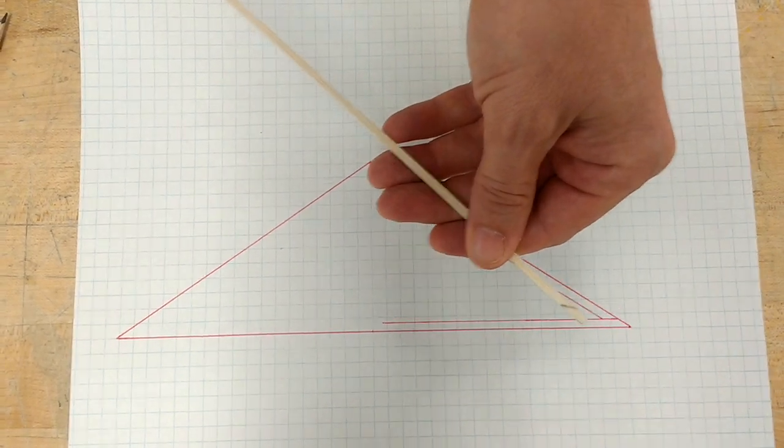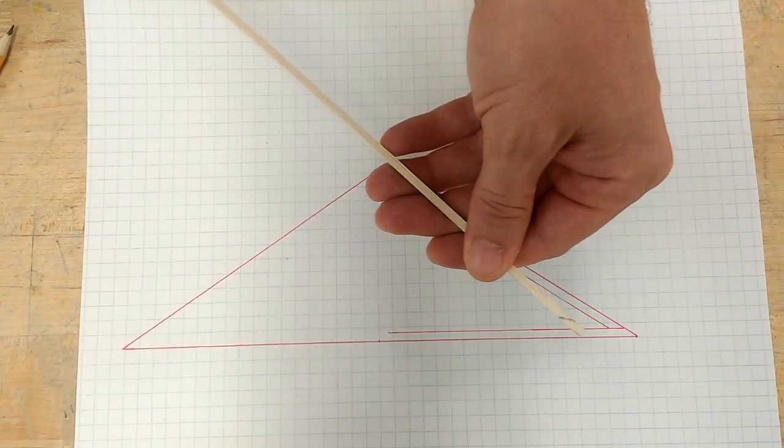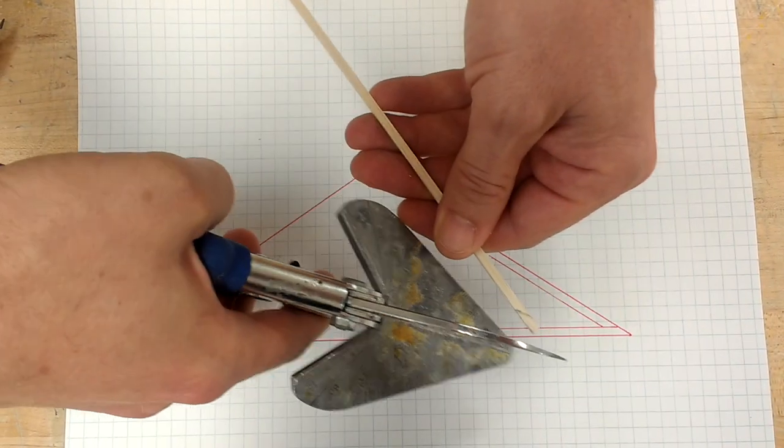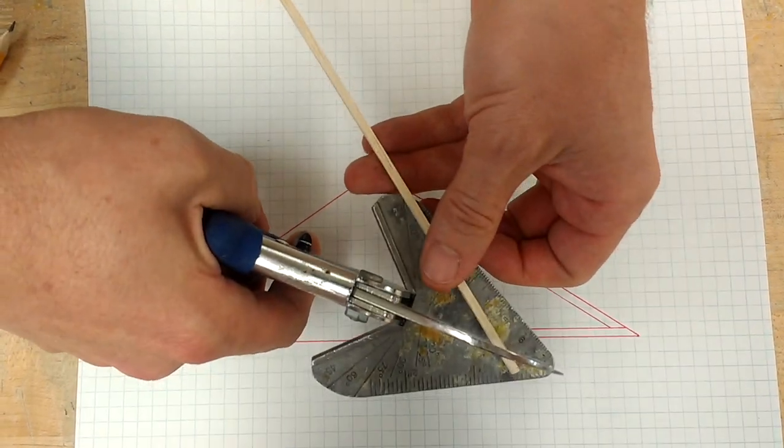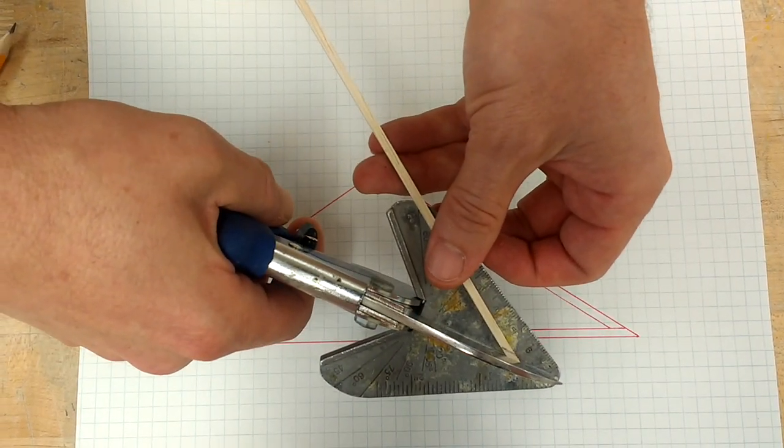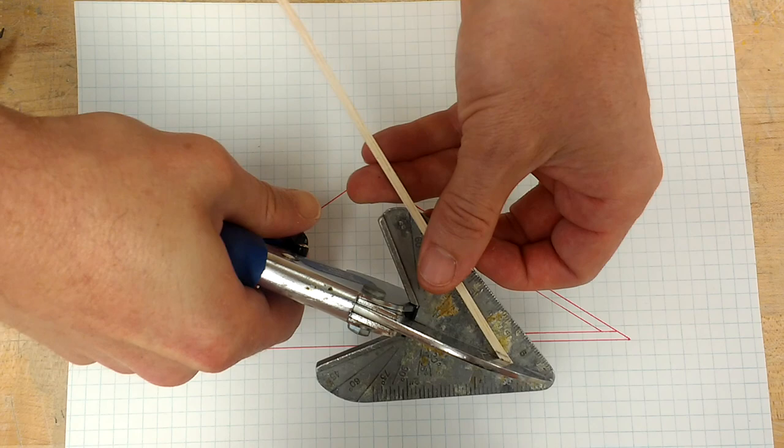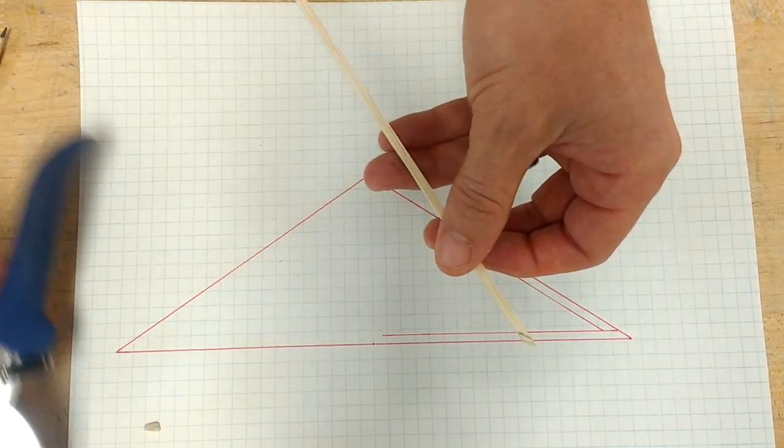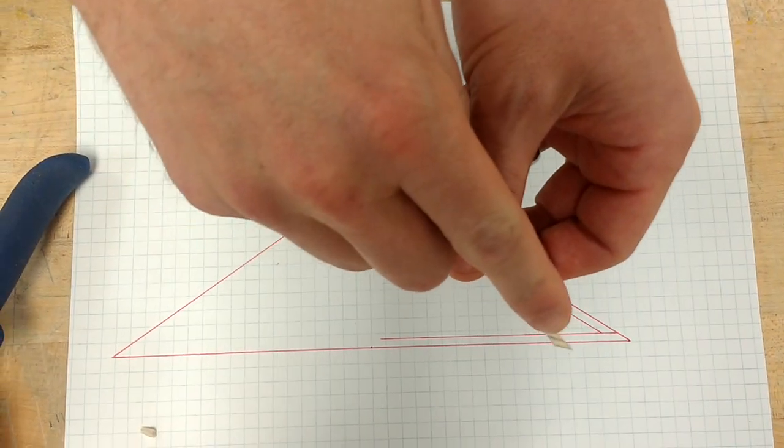The other issue that a lot of students have, and this hurts with the construction grade, is that they'll actually cut straight to the line with a pair of easy cutters. Do not do that. Leave a little bit of extra length and cut there. So you still have a little bit of spare room here.